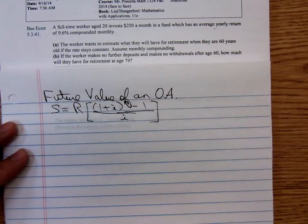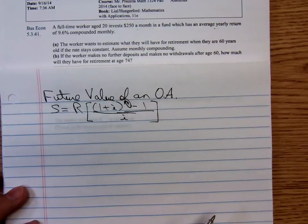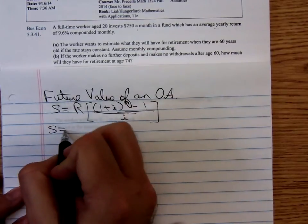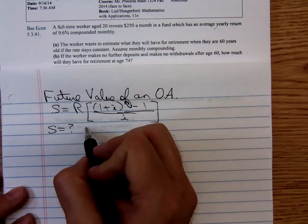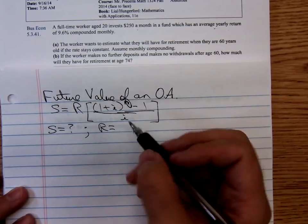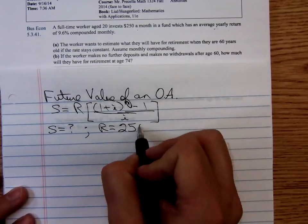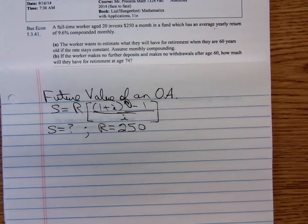That's what we're looking for, the future amount. R is the amount of the periodic payment, that's $250. This person is putting in $250 a month into the account.